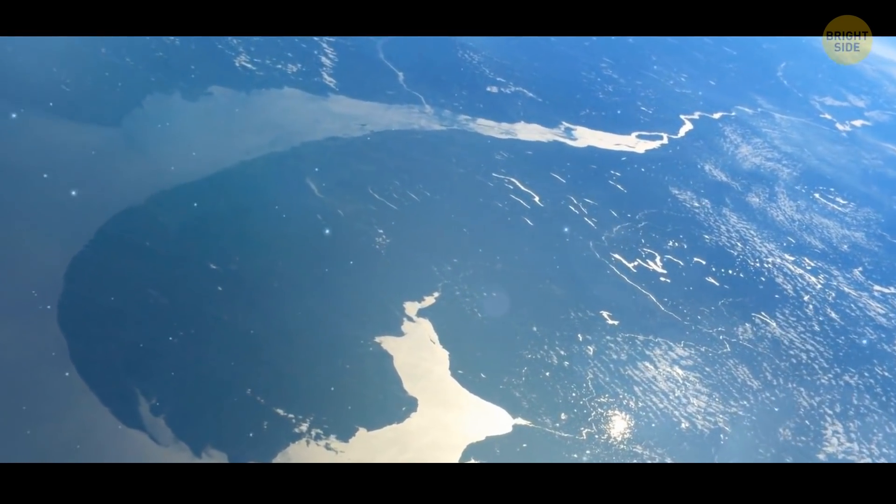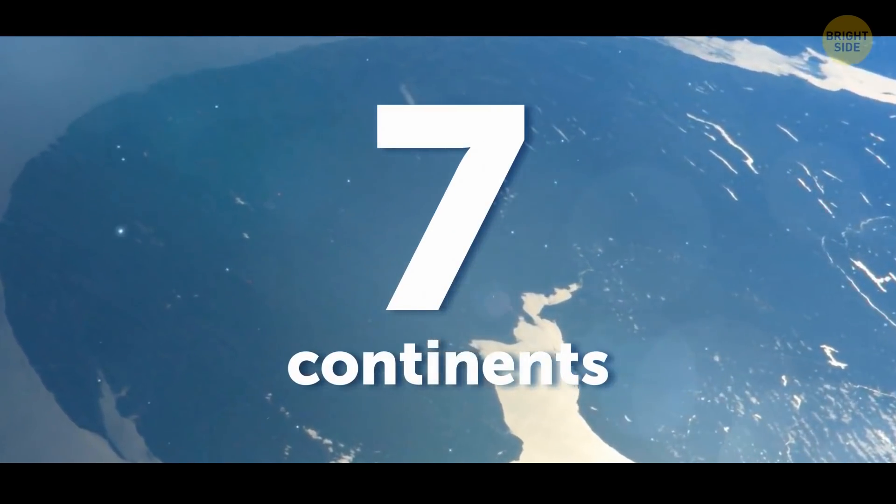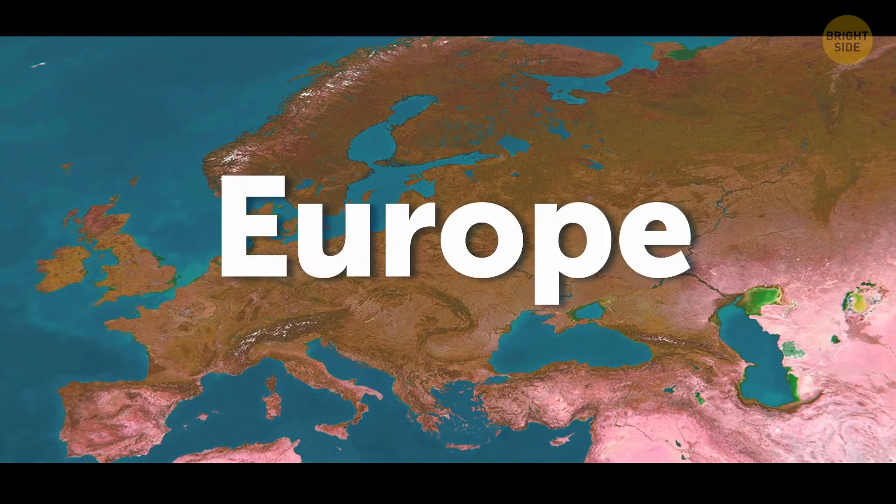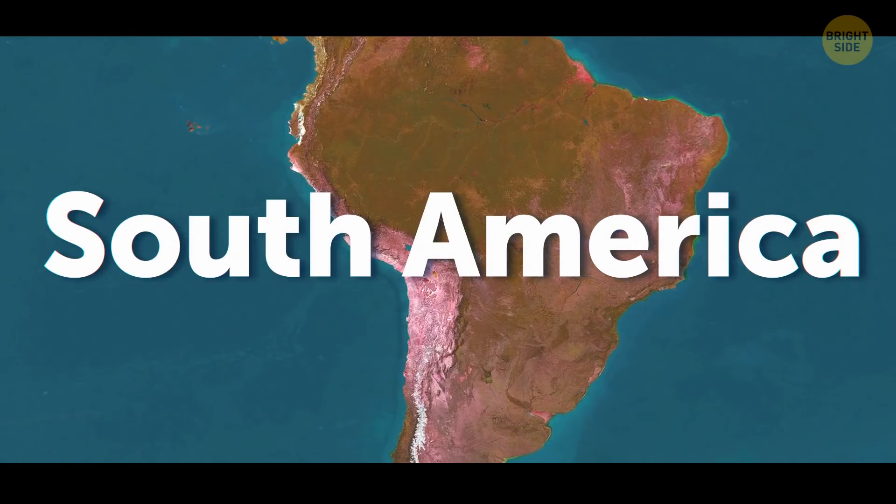If you're from the U.S., you heard that there are seven of them: Africa, Antarctica, Asia, Australia (also called Oceania), Europe, North America, and South America.